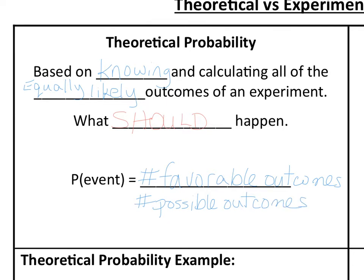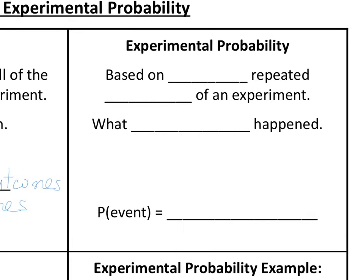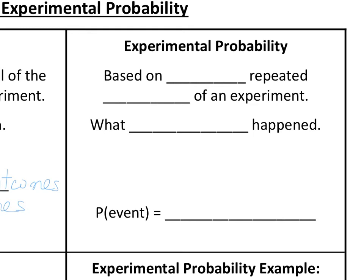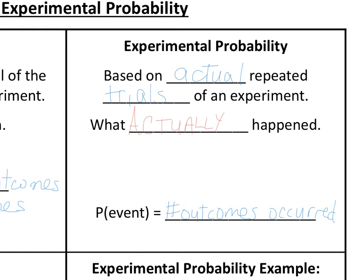When we're discussing experimental probability, that is based on actual repeated trials in an experiment — it's what actually happened. When we set up our ratio, we're comparing the number of outcomes that occurred to the number of trials performed.